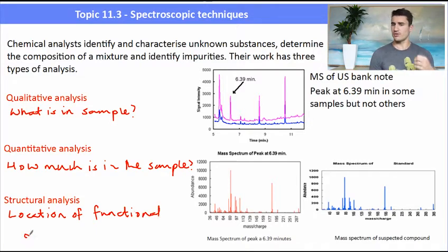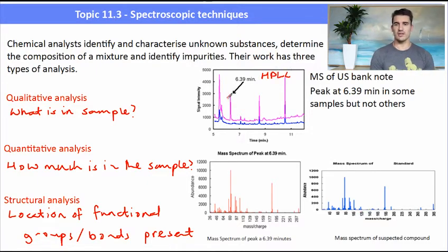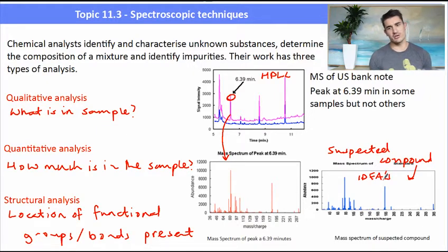On the right hand side I've got three analysis of a US bank note. What they did is they passed the contents of the bank note through a solvent and then all of the things on the bank note dissolved. They passed it through HPLC which separated it into its compounds. One of the peaks at 6.39 minutes appeared on some notes but not on others. So they ran the mass spec of that peak through the device and got a fingerprint of the device, then came up with the suspected compound. They matched it up due to its fingerprint and had a library of possibilities. I want you to have a think - what do you think that compound was? I'll tell you at the end of the volume.